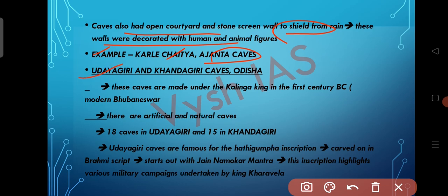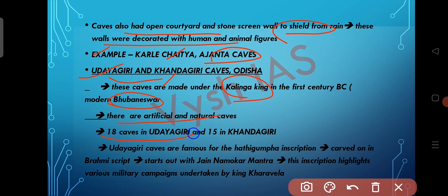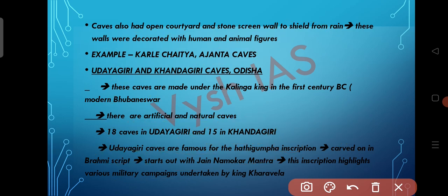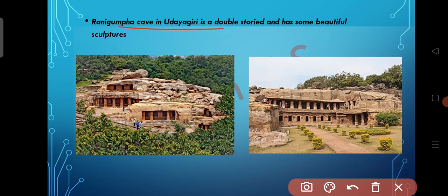Now let's see about Udaigiri and Khandagiri Caves of Odisha. These caves were made under the Kalinga king in the 1st century BC and are located in present-day Bhubaneswar. There are artificial and natural caves — 18 caves in Udaigiri and 15 in Khandagiri. In Udaigiri, there is a famous inscription called Hathi Gumpha, carved in Brahmi script, starting with the Jain Namokar Mantra. This inscription highlights the military campaigns of King Kharavela. Rani Gumpha cave in Udaigiri is double-storeyed and has beautiful sculptures.